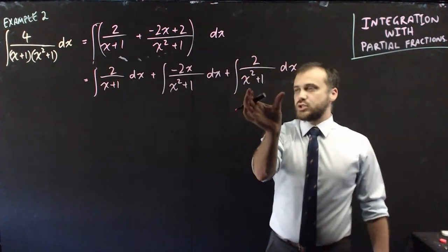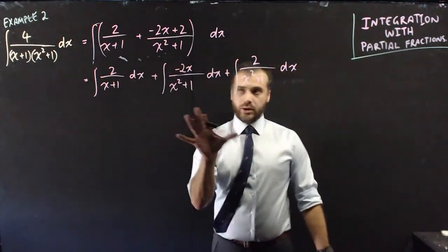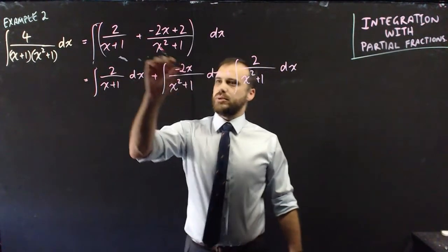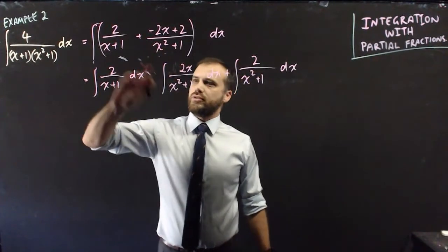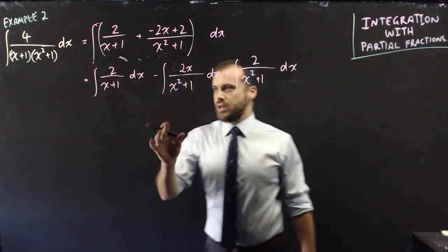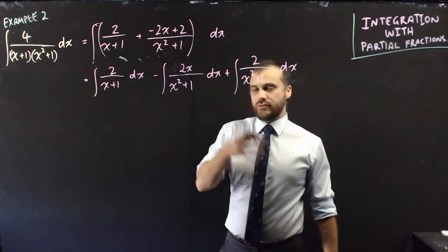We've got three individual parts that we need to integrate. Now I'm not in love with this negative 2x here, so I'm just going to move that negative from there and just put it out the front of the integral. That's fine. And now I can integrate each of these in turn.